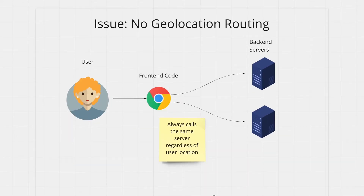You have to explicitly define your backend servers in your front-end code, which means you can't do any kind of geolocation routing for your backend servers. Let's say you have two copies of the same server running — one in Europe and another in America. A user goes to your website from the US; you want their browser to always talk to the backend server in the US. But since you have to hard-code the server address, it's not possible in this design — you always hit that one server regardless of the user's location.